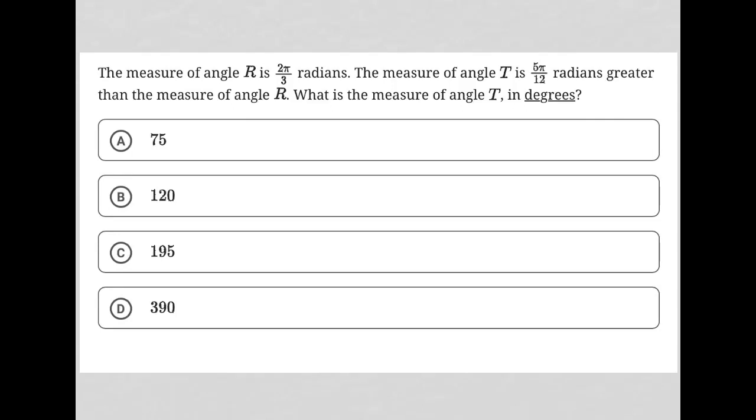This question says the measure of angle R is 2π/3 radians. The measure of angle T is 5π/12 radians greater than the measure of angle R.